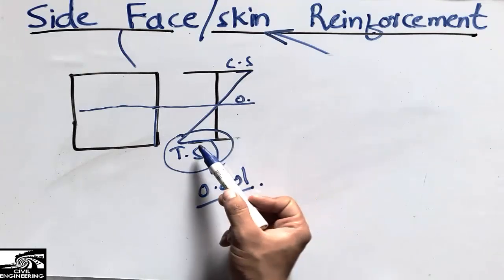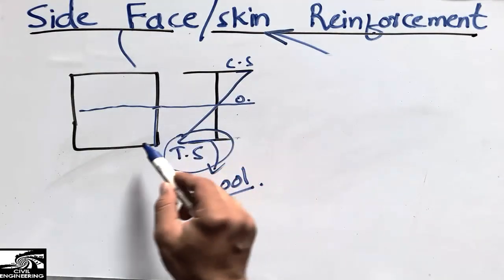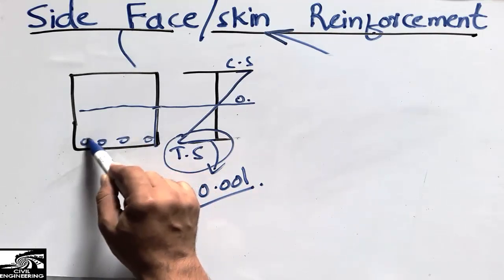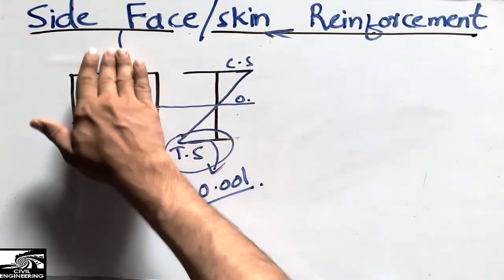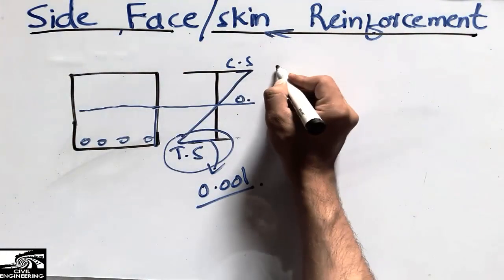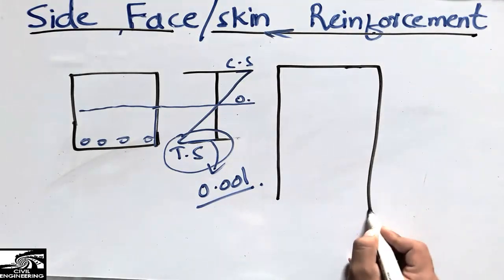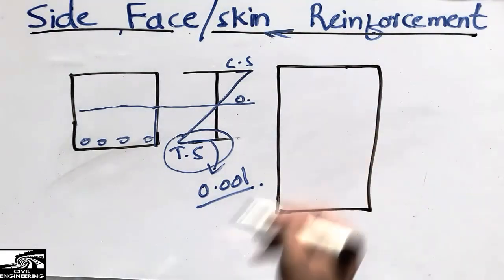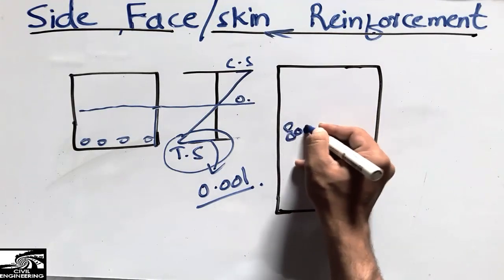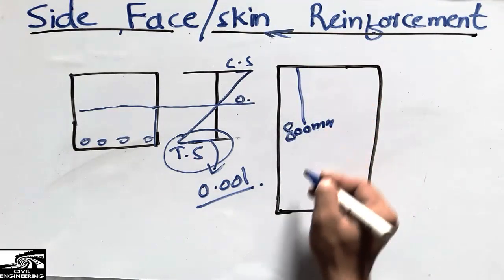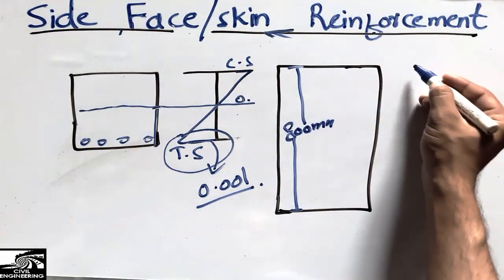Since the tensile strain does not exceed the capacity in a shallow beam, only the main bottom reinforcement is sufficient. However, when we use deep beams — when the depth exceeds the limits I discussed earlier, for example 800 mm — the situation changes significantly.